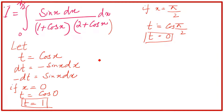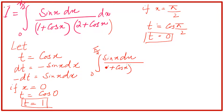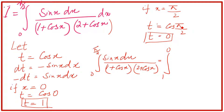So how can we rewrite this? Our original integral from 0 to π/2 of sin(x) dx over (1 + cos x)(2 + cos x) now has limits from 1 to 0, and sin x dx becomes minus dt. With t substituted for cos x, we have: integral from 1 to 0 of minus dt over (1 + t)(2 + t).